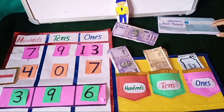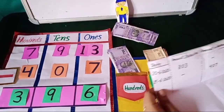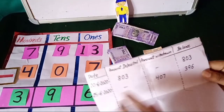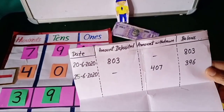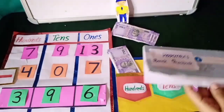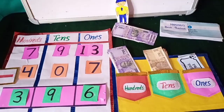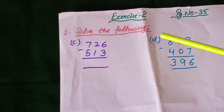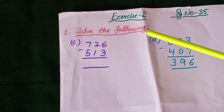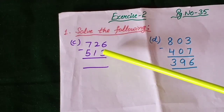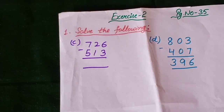Let's check from Harman's passbook — he has 396 rupees left. We have already solved part D of the first question. You will solve part C of the first question with the help of currency notes. Thank you.